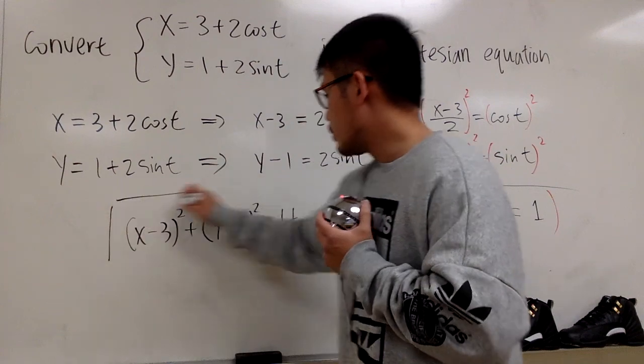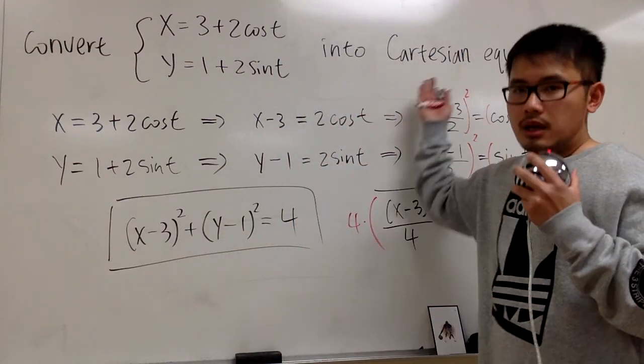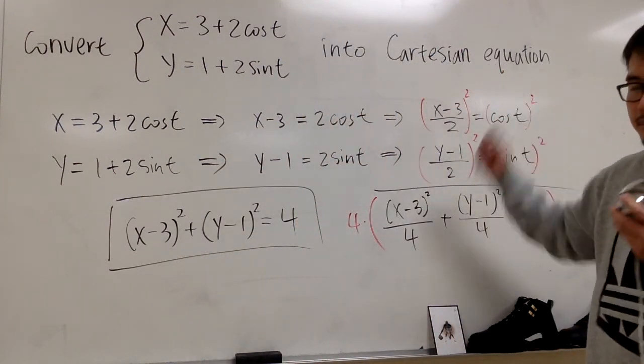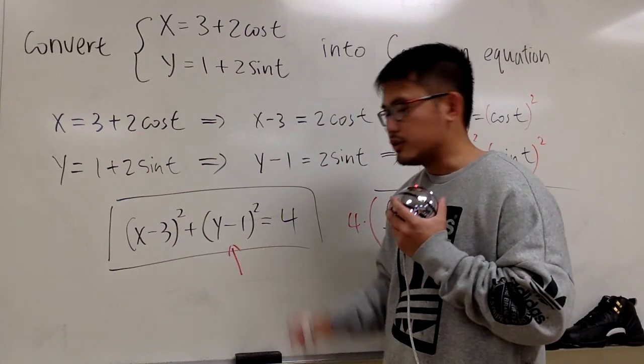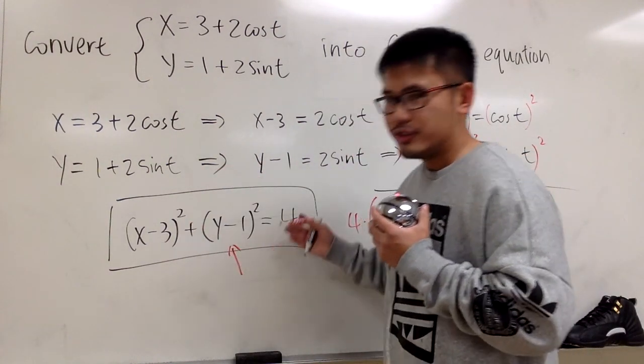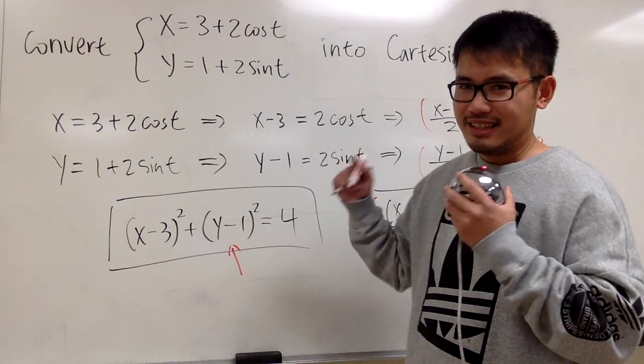And this right here will be the answer, in terms of getting the Cartesian equation. But can we explain what this equation is about? The graph of this equation is going to be a circle.